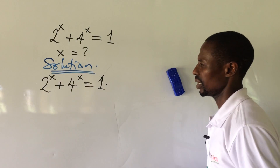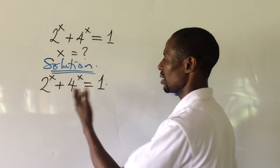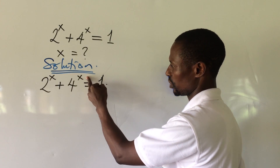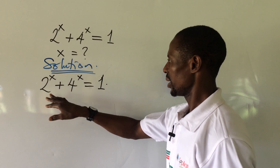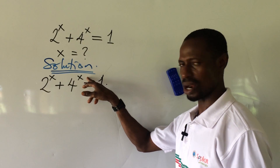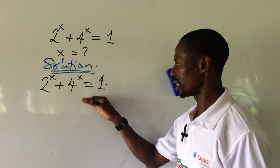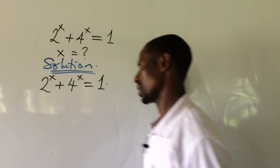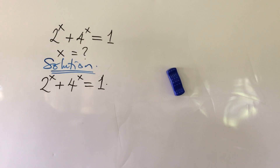How do we now handle this? I could as well write 4 as 2 to the power of 2, all to the power of x. Whereby we're going to have 2 to the power of x here, and 2 to the power of x all to the power of 2. So we can form a quadratic equation from this expression. But look at the approach I want to use here — we'll still arrive at the same answer.